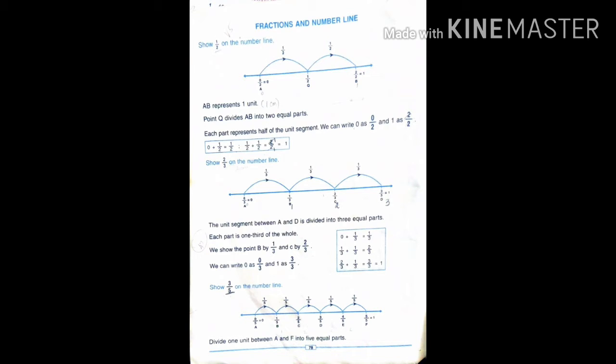Let's look at A, Q, B. If you look at A, it is the starting point — it is 0. Then Q is denoted as 1 by 2. So 1 by 2, it is 0.5.